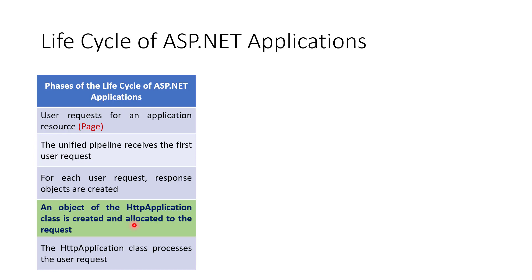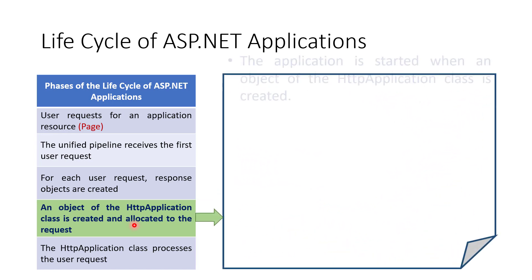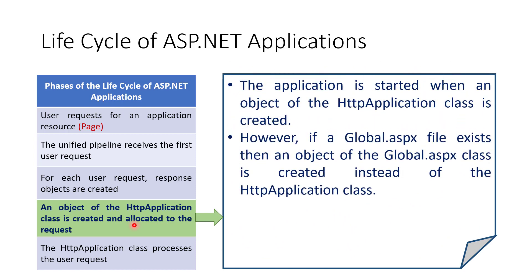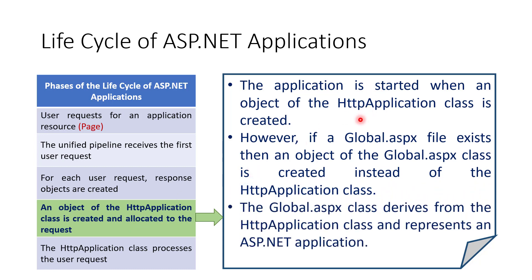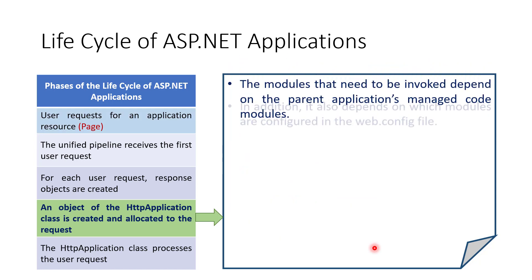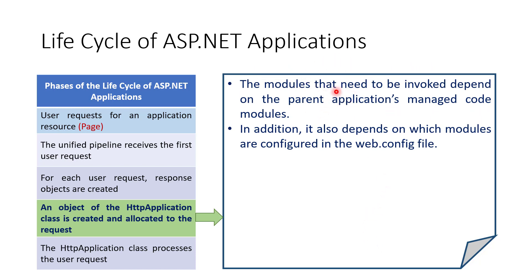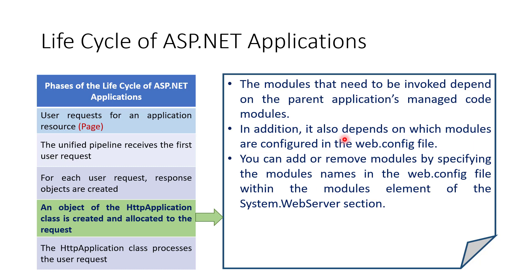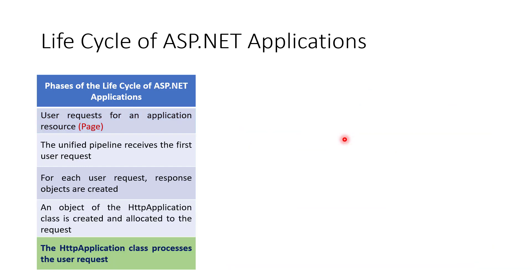The fourth phase is where an object of the HttpApplication class is created and allocated to the request. The application is started when this object is created. However, if a Global.asax file exists, an object of the Global.asax class is created instead of HttpApplication. The Global.asax class is derived from HttpApplication and represents the ASP.NET application. Which modules are invoked depends on the parent application's managed code module and the modules configured in the Web.config file. You can add or remove modules by specifying the module name within the modules element of the system.webServer section in Web.config.